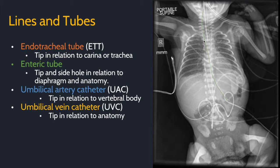The enteric tube is in green. Describe where the tip and the proximal side hole are in relation to the diaphragm and anatomy. Here, the tip is below the diaphragm, likely in the stomach.